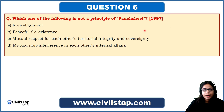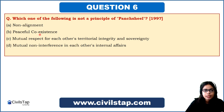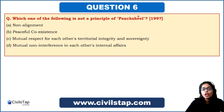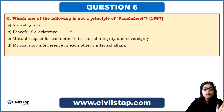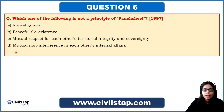This question came in the prelims of 1997. We were asked: which of the following is NOT a principle of Panchsheel? Our options are: non-alignment, peaceful co-existence, mutual respect for each other's territorial integrity and sovereignty, and mutual non-interference in each other's internal affairs. Non-alignment was not a principle of Panchsheel. So option A is the answer.